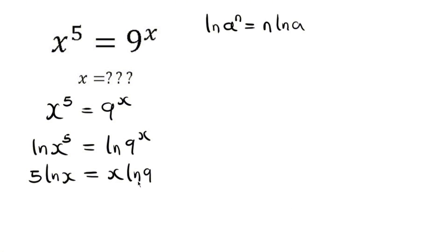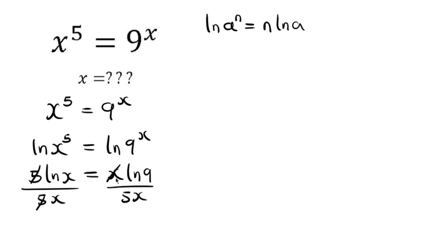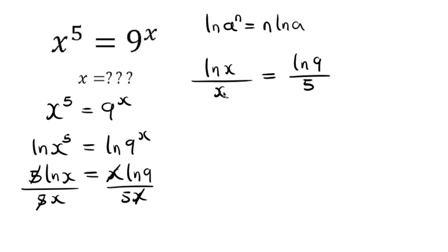Now we need the variables on one side and the numbers on the other side. We have a variable and a number on each side, so we'll divide both sides by 5x. The 5 cancels with 5, leaving just variables on the left, and the x cancels with x on the right, leaving just numbers. So we have ln(x)/x = ln(9)/5.